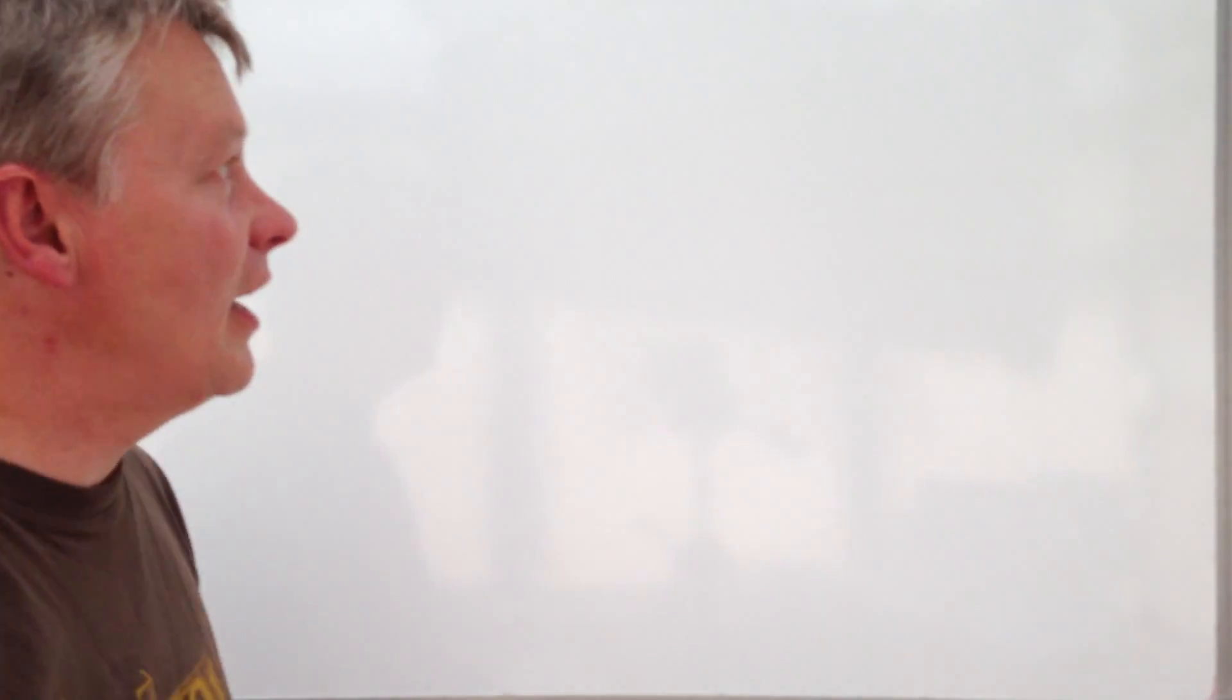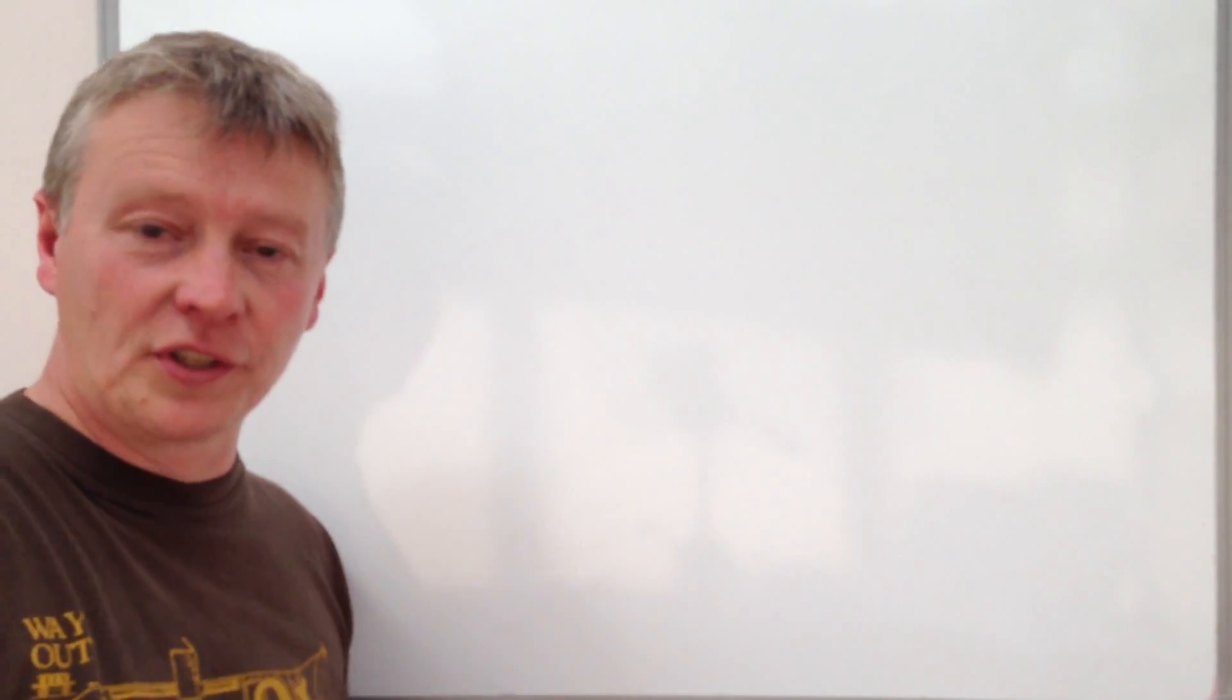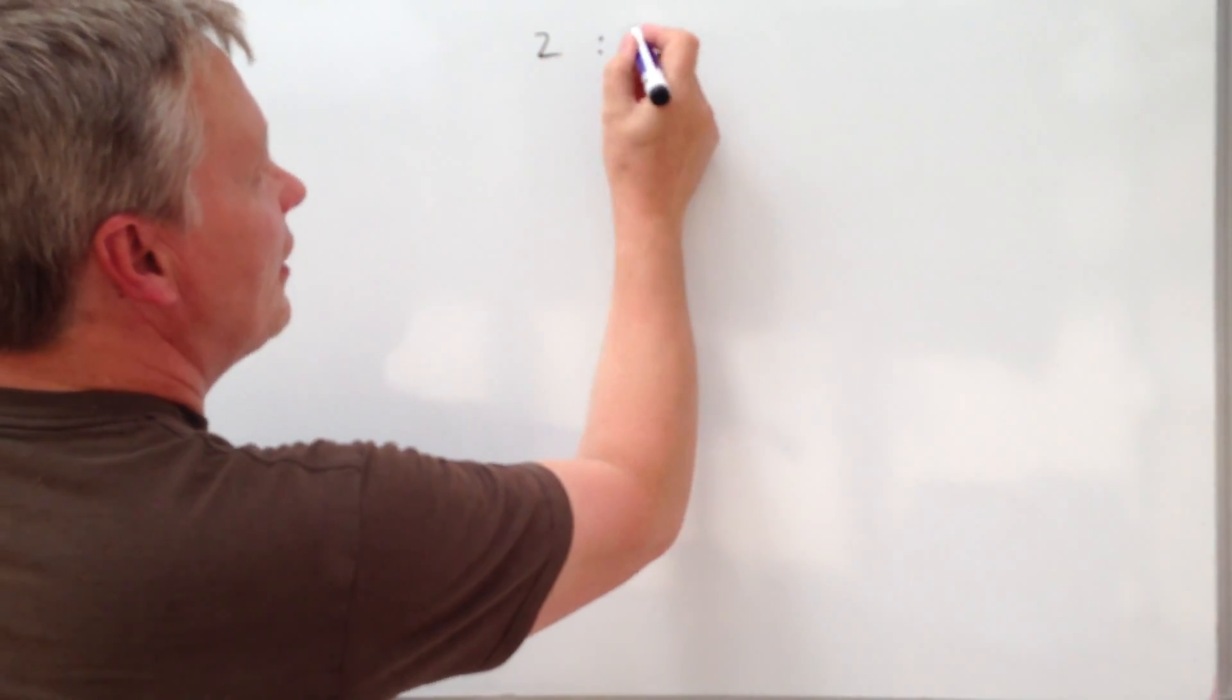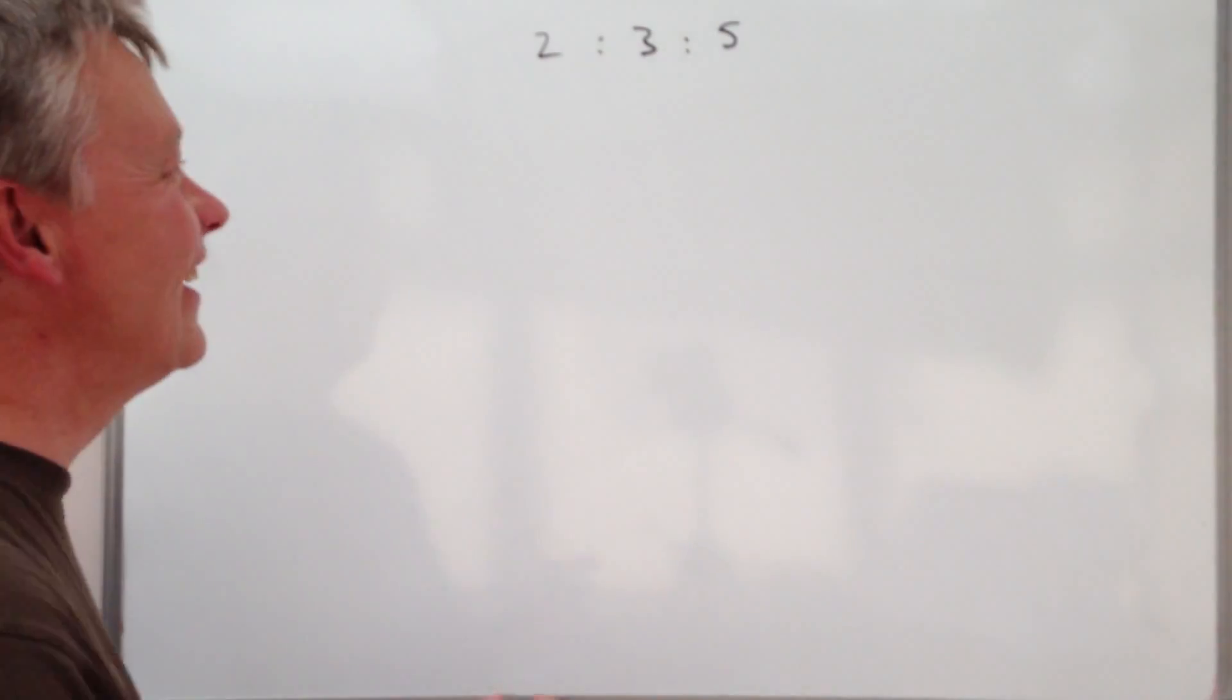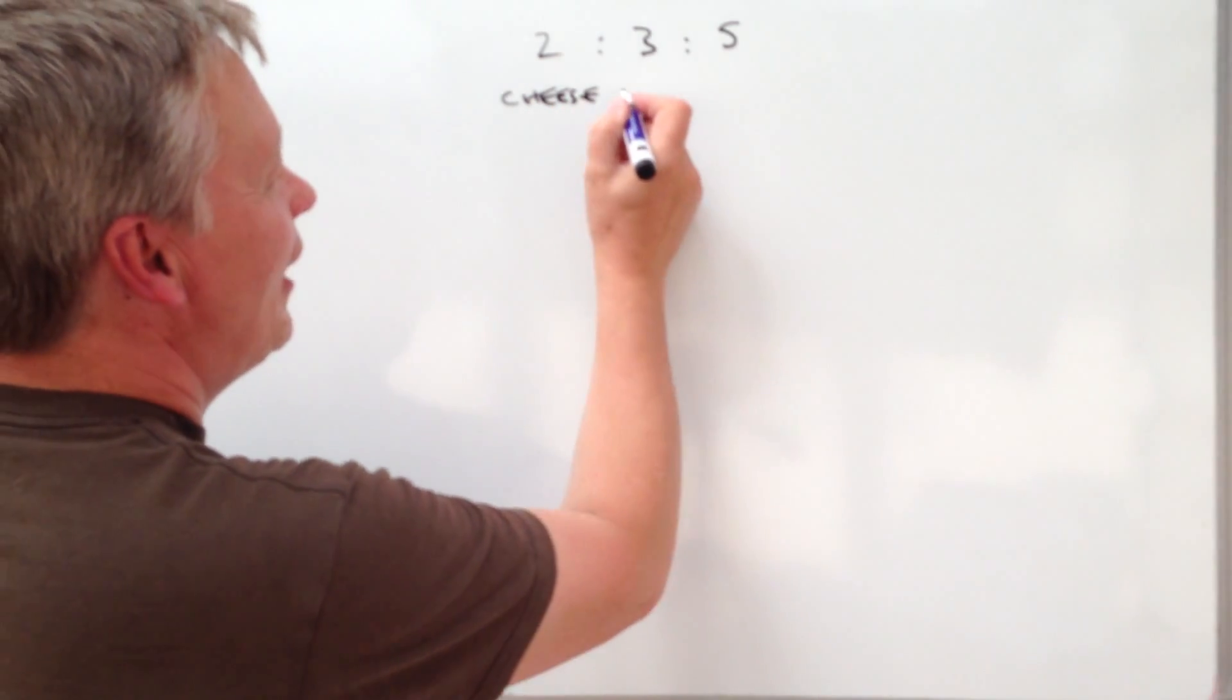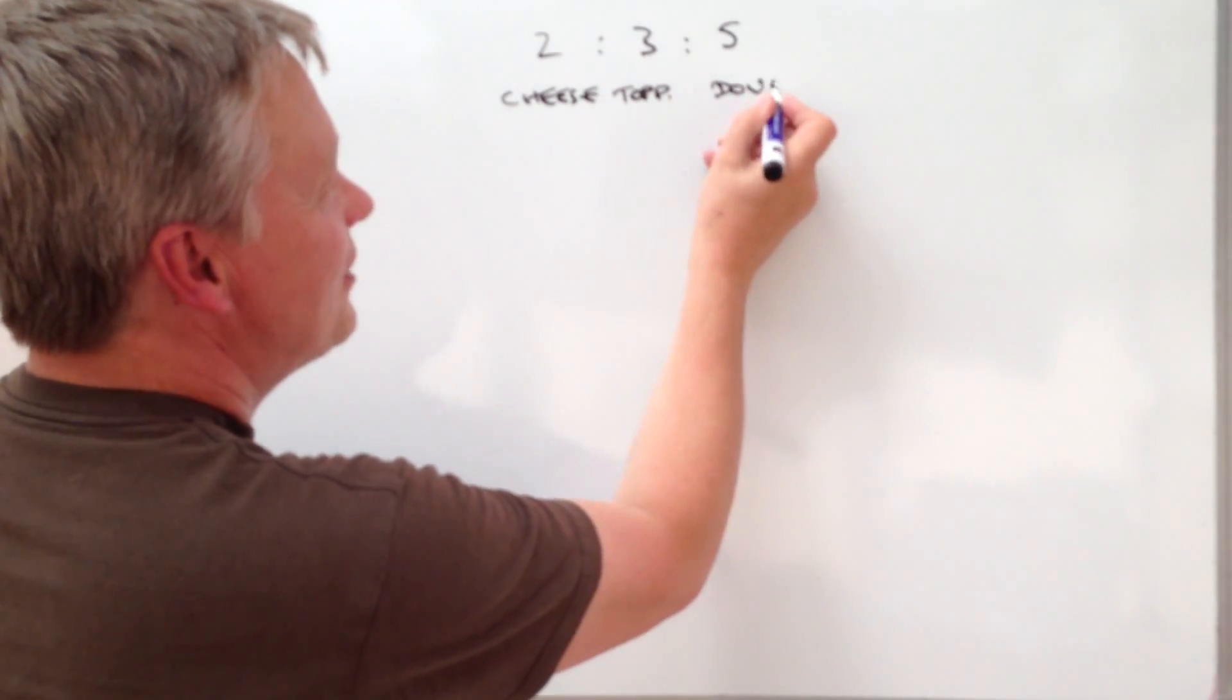So this particular question I will put into the description box below and also if you visit MathsRap it will be on there as well. This particular question deals with making a pizza and this particular person is going to make pizza in the ratio of two, three to five. So it's two lots of cheese, three lots of topping...